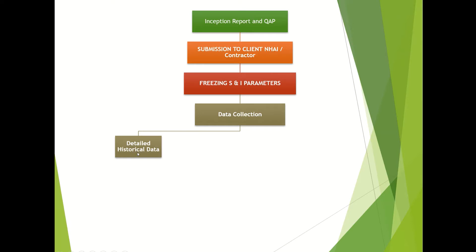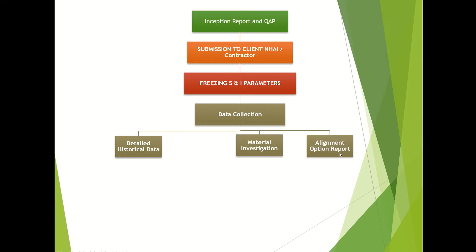One is detailed historical data, which includes land plans and all those things. The other is material investigations - in data collection, material investigations cover where we will get the aggregates, cement, fine aggregate, sand, and all those things. After that, alignment option reports are very important. In alignment options, you have to fix the bypasses and do some site proposals. Once the alignment options have been finalized, you can proceed for the horizontal alignment design.